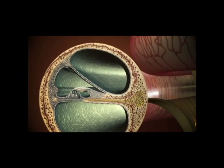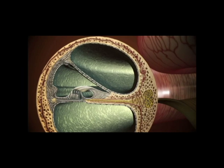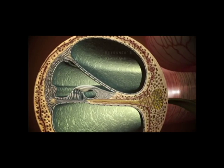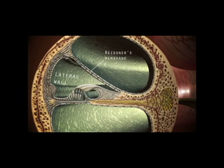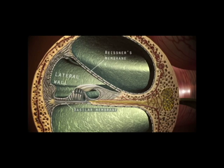Enclosing its own unique fluid called endolymph, the scala media consists of a roof called Reissner's membrane, a lateral wall, and a floor called the basilar membrane.